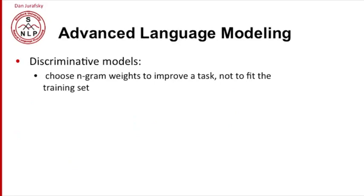How about advanced language modeling issues? Recent research has focused on things like discriminative models. So here the idea is, pick the n-gram weights, instead of picking them to fit some training data, whether it's maximum likelihood estimate or smooth. Instead, choose your n-gram weights that improve some task. So we'll pick whatever task we're doing, machine translation or speech recognition, and choose whatever n-gram weights make that task more likely.